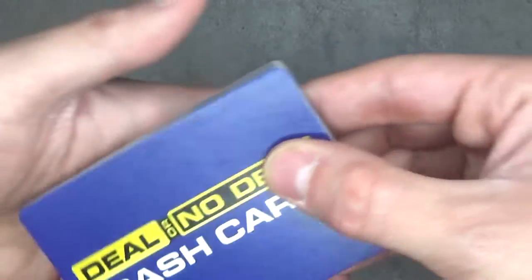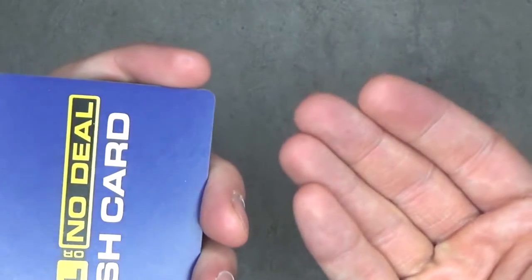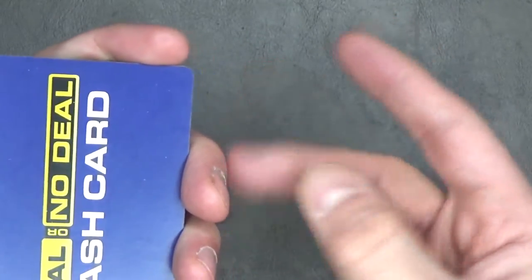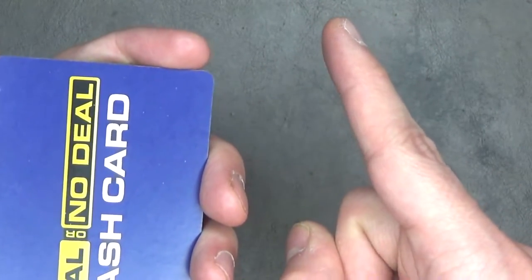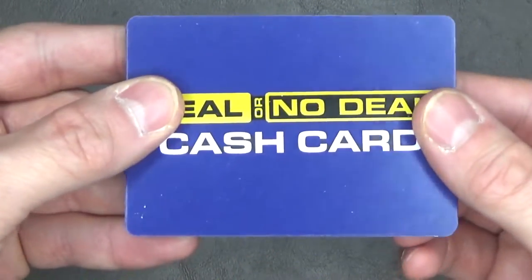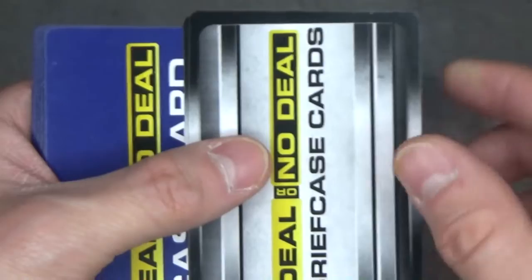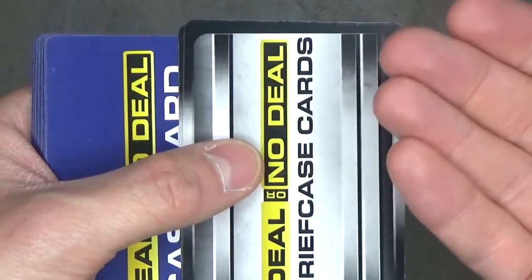The game is played between two people and a winner is determined from two games. One player is the contestant and the other is the host. The host shuffles all of the cash cards and places them face down across the table. Then the host will take all of the briefcase cards and lay them on top of each cash card with the number side up.